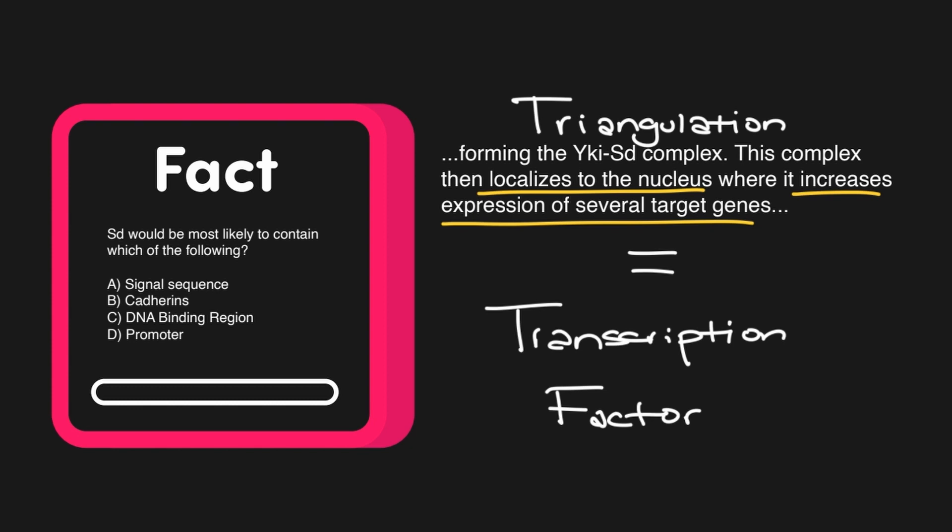It probably wouldn't have a signal sequence then, because signal sequences tell things to be excreted from the cell or at least go to the plasma membrane. Cadherins involve the junctions between cells, and that's not really relevant because junctions don't happen between the nuclei of two cells. A DNA binding region sounds really tempting because it would need to bind to DNA, therefore C is the right answer. And D, a promoter, doesn't make any sense because presumably if this is binding to DNA, especially if it's a transcription factor, which are proteins, it's not DNA. Only DNA has promoters, therefore we wouldn't expect SD to have a promoter itself.